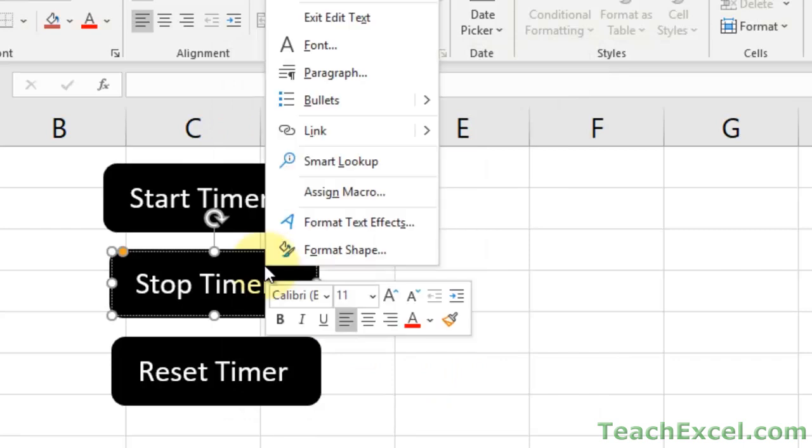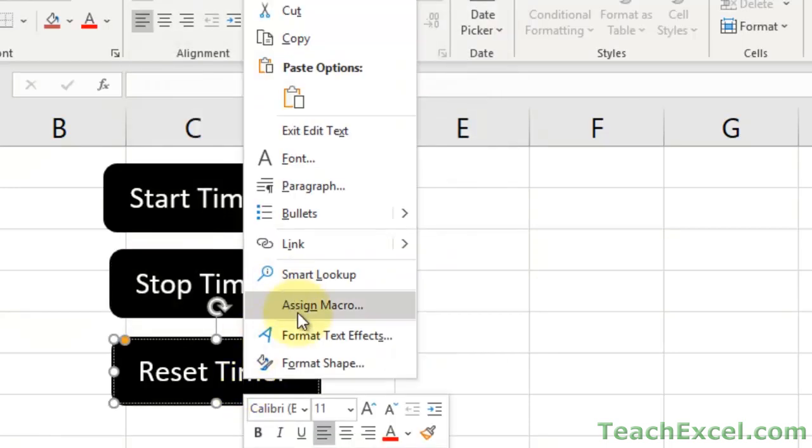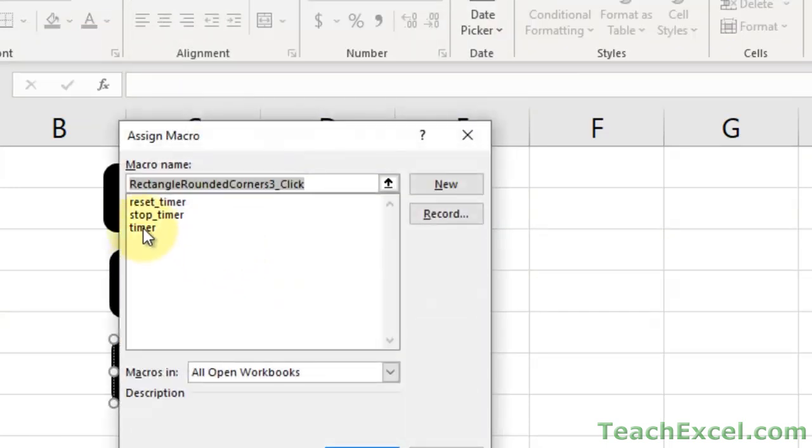Right-click. Assign Macro. Stop Timer. OK. Right-click. Reset Timer. Reset Timer. OK.